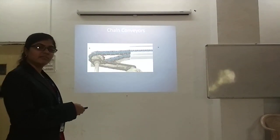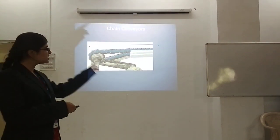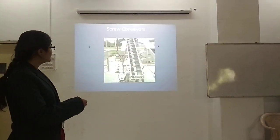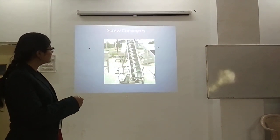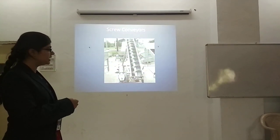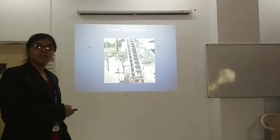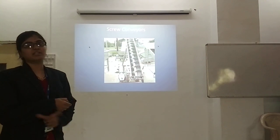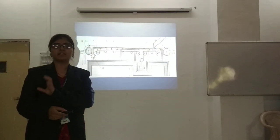Next is the chain conveyor. It consists of a head sprocket and tail sprocket connected with the help of an endless chain. Next is the screw conveyor. As you can see, it is a threaded screw which rotates inside a container. Because of this, the screw conveyor can be used for conveying semi-solid materials. Now we will see the basic elements of the belt conveyor system.